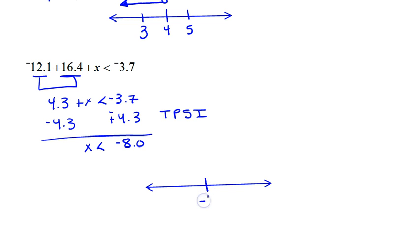My center number is going to be negative 8. One greater would actually be negative 7 and one less would be negative 9. This is less than, so I'm going to use an open dot. And x is less than, so I need to go to the left. And now I've graphed my inequality.